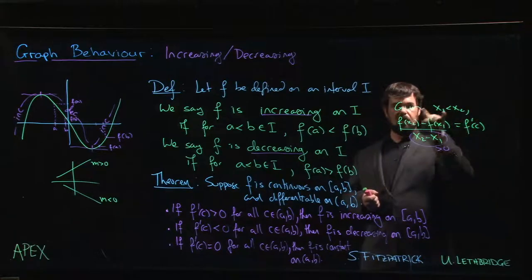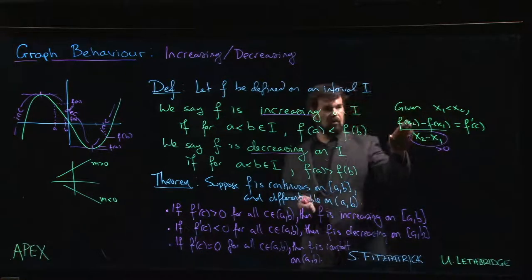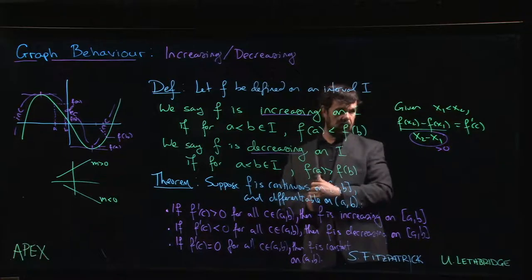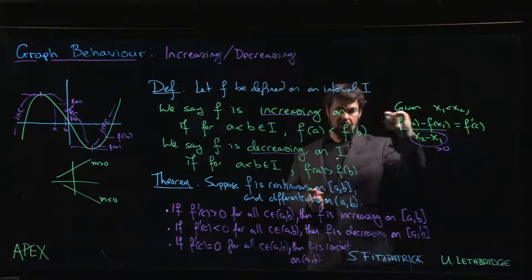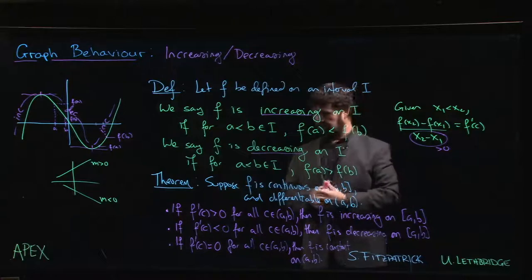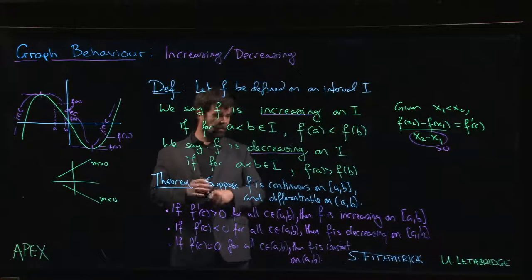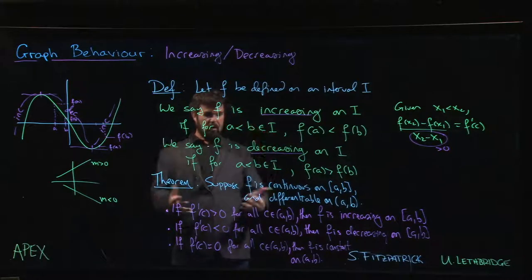If f' is negative, this is negative, and that means that f(x2) is less than f(x1) - we're dealing with a decreasing function. If the derivative is zero, these are equal, we have a constant function. So it's a simple, straightforward application of the mean value theorem to see that we have this.